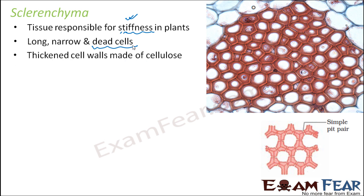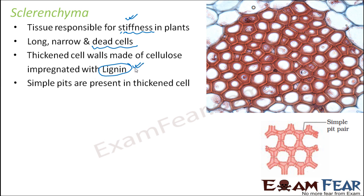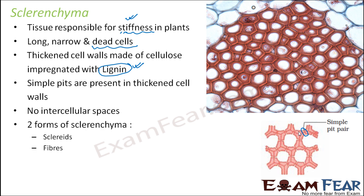So here also thickened cell walls are made up of cellulose. If you see, the cell walls are so very thickened — the more thick the cell walls are, the more strong the cell is. The cell walls are impregnated with lignin, so lignin is the composition of the thick cell walls here. Simple pits are present in the thickened cell walls. Even in these thick cell walls there are simple pits — you can see some small tunnel-like structures, known as simple pits, used for transmission or exchange of materials from one cell to another. There are no intercellular spaces at all.